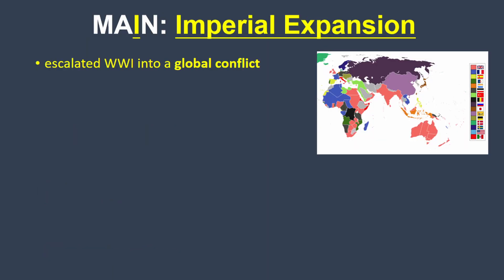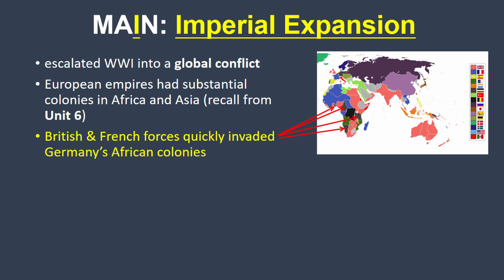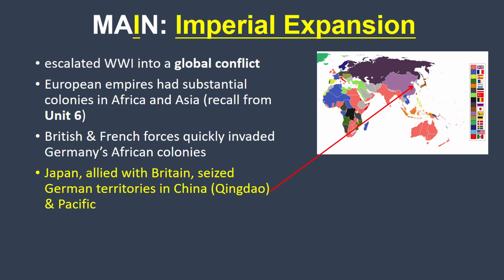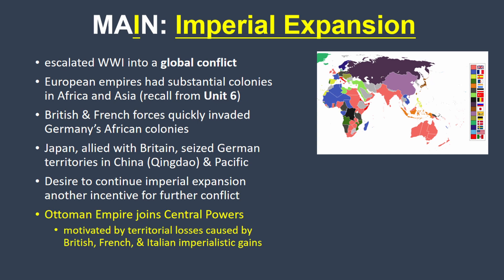Now imperialism — specifically imperial expansion. This is the reason why the war escalated out of Europe to become a truly global conflict. As we recall from Unit 6, European nations had amassed substantial overseas empires in Africa and Asia. When the war broke out, almost instantly British and French forces invaded Germany's African colonies. The Japanese, who were allied with the British, took the opportunity to invade German possessions in China and the Pacific. The desire to get ever more territory was another incentive for the imperialists to get into conflict. Also, the Ottoman Empire joined the war on the side of Germany partially because it had lost territory to Britain, France, and Italy as a result of imperial expansion in earlier decades.